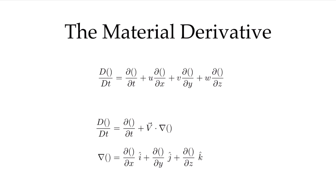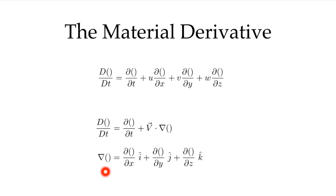Let's look at the definition of the material derivative. We've derived this quantity, given the symbol capital D/DT, and we can apply it to any of our variables. It is defined as the temporal component — the partial derivative of whatever we're taking with respect to time — plus u times the partial derivative with respect to x, plus the v-velocity times the partial derivative with respect to y, plus w times the partial derivative with respect to z. We can also write that in vector notation, introducing the nabla operator: partial derivative with respect to time plus the velocity vector dot-product with the nabla operator, which gives the i, j, and k components as the derivatives with respect to x, y, and z respectively.